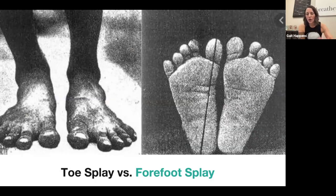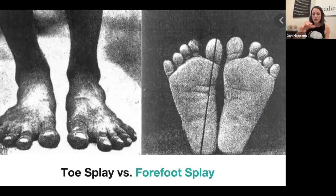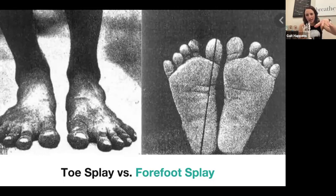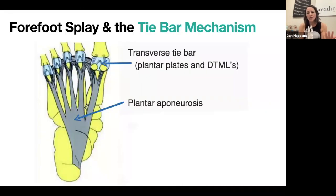Beautiful things happen within the foot when forefoot splay can occur. When you go into mid stance or full foot loading, one of the things that happens is that pronation is necessary to absorb shock. When you look at the metatarsals, the metatarsals will splay — and that's one of the mechanisms to help absorb shock of the foot when we walk. There is a ligament that goes across the metatarsals called the deep transverse metatarsal ligament, and you can see how that runs across the metatarsal heads there.